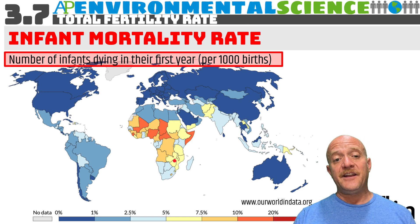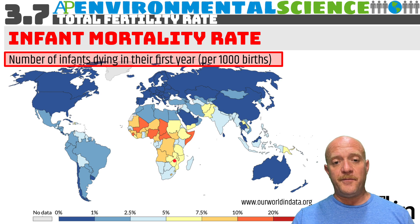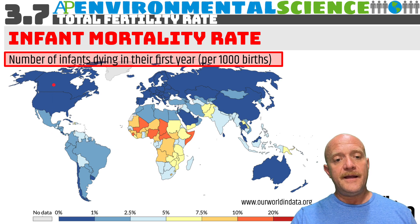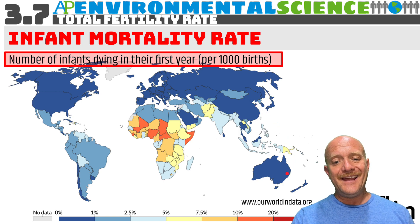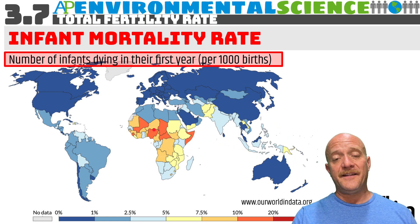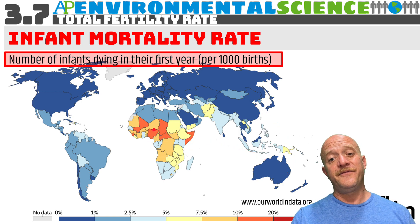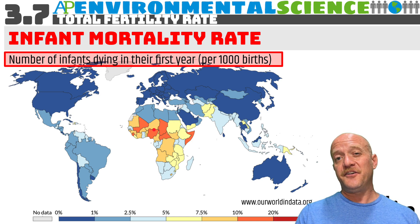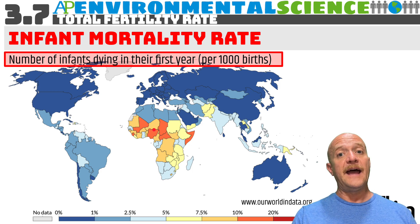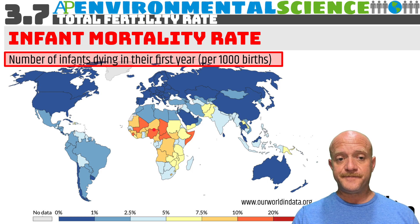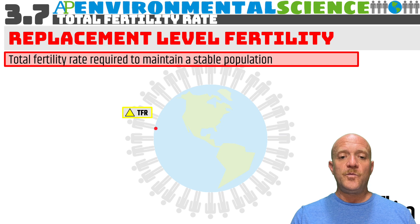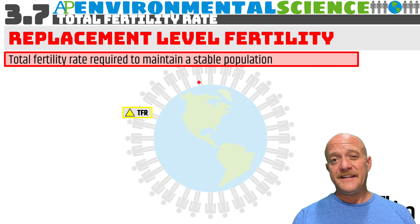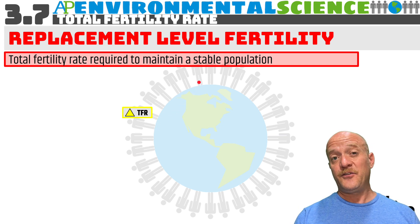The infant mortality rate is very low in North America, also lower in Europe and much of Asia. In sub-Saharan Africa the mortality rate is quite high. Globally, the infant mortality rate is just under 30 deaths per 1,000 live births. This connects to the concept of replacement level fertility, which goes hand-in-hand with the total fertility rate.